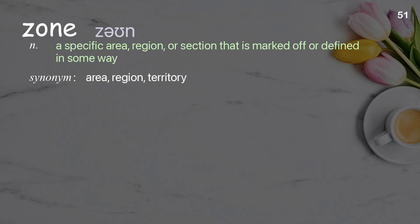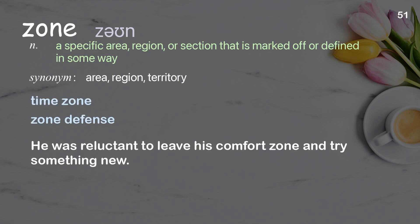Zone: a specific area, region, or section that is marked off or defined in some way. Examples: time zone; zone defense. He was reluctant to leave his comfort zone and try something new.